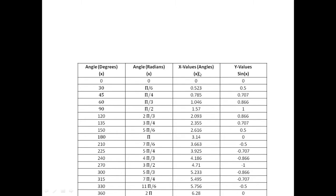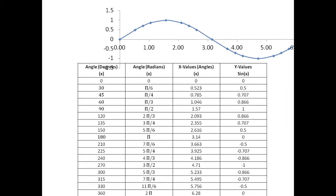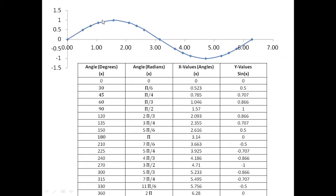Now if we plot these values of x and y in the Cartesian plane, we shall get the corresponding graph. Here we can observe it varies positively, and when it comes to 3.14, that is pi, the value is 0, and then it goes towards negative. After pi — that is 180 degrees, 3.14 — the value starts becoming negative and then returns to 0. This is known as the sine wave or graph of sine, but it doesn't stop here because if we consider angles more than 360 degrees, we can still plot the graph as it goes to infinity.